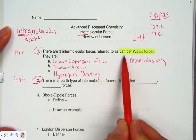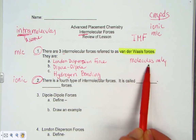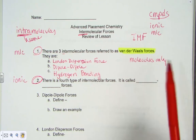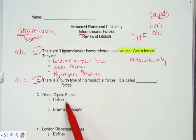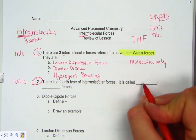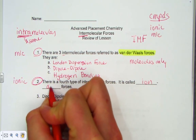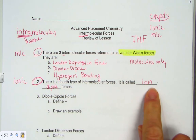These three — London dispersion, dipole-dipole, and hydrogen bonding — are categorized as Van der Waal forces because they exist between molecular compounds where nonmetals bond together. The fourth type of intermolecular force, unique to ionic compounds, is called an ion-dipole force.